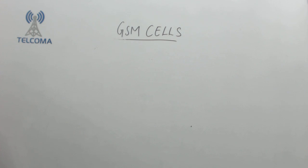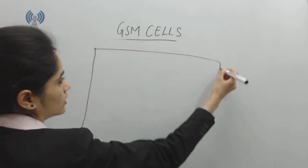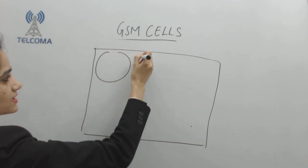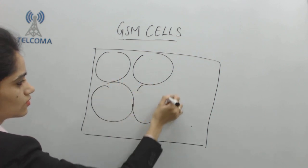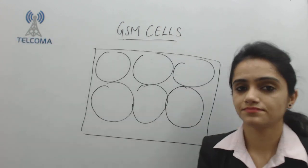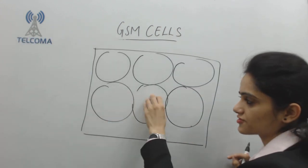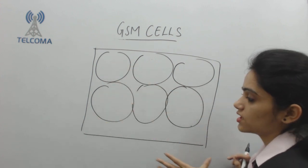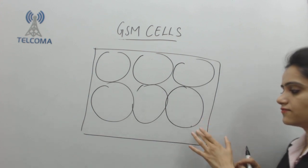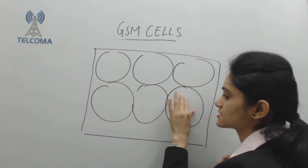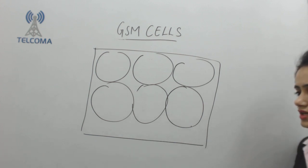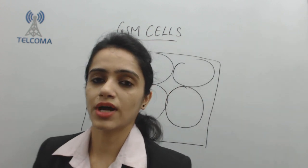If I consider the whole area where I need to provide GSM coverage, practically I am having a number of cells — cell 1, cell 2, cell 3, and so on. Together these cells form my complete cellular structure. A mobile phone accessing one of these cells is called a cell phone because it is able to access the cell.